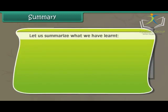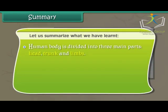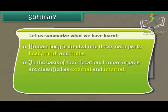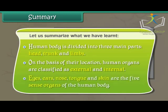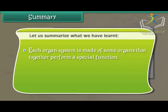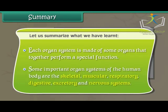Let us summarize what we have learned. The human body is divided into three main parts: head, trunk, and limbs. On the basis of their location, human organs are classified as external and internal. Eyes, ears, nose, tongue, and skin are the five sense organs of the human body. Each organ system is made of organs that together perform a special function. Some important organ systems are the skeletal, muscular, respiratory, digestive, excretory, and nervous system.